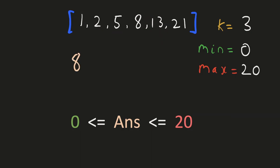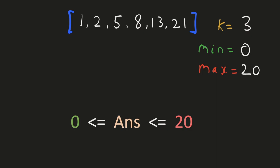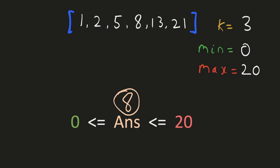Let's check if tastiness 8 is possible. We choose the first number 1. The next acceptable number with a difference of at least 8 is 13. Comparing with 13, the difference with 21 is 8 which is acceptable — so we have found 3 valid numbers. Now let's see a tastiness value that will not be possible. We choose 1, the next acceptable number is 13, but 21 is not acceptable because the difference is less than 9. So we were not able to select 3 valid numbers for a tastiness of at least 9. Out of all the possible tastiness values, the maximum valid value is 8, hence that will be our answer.